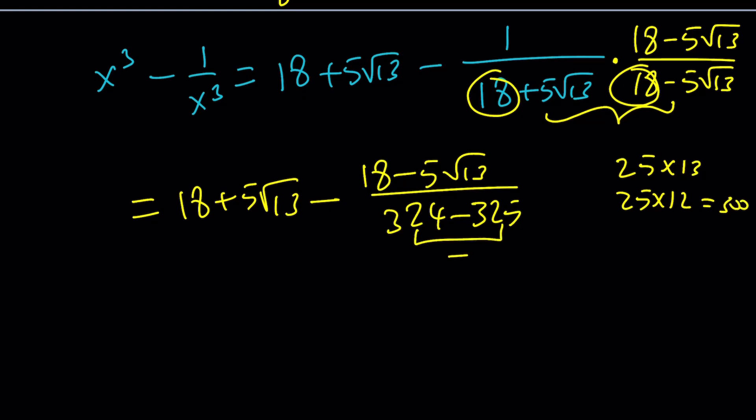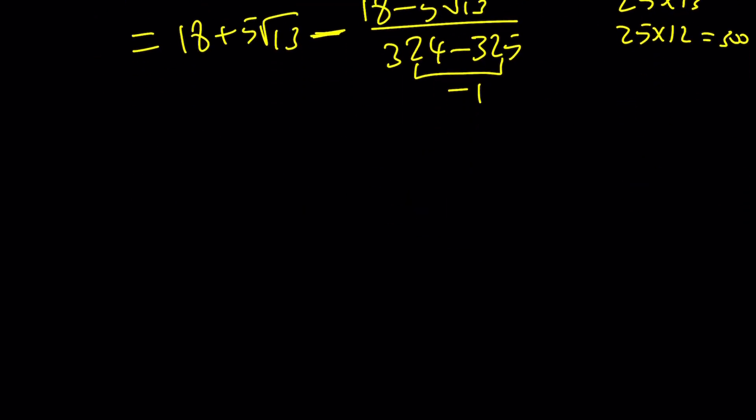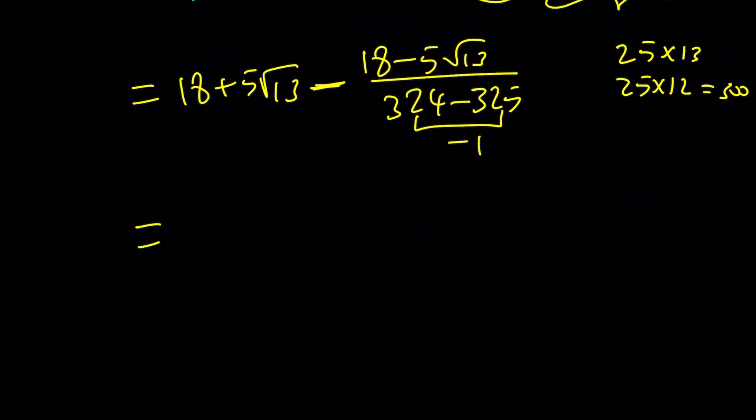So this is going to be a negative 1. And we have another minus sign or negative sign. We can go ahead and negate those. And that gives us 18 plus 5 root 13 plus 18 minus 5 root 13. Because I have a 1 at the bottom. And these two terms cancel out, leaving us with something super-duper nice. And that will be 36. So the answer is 36.